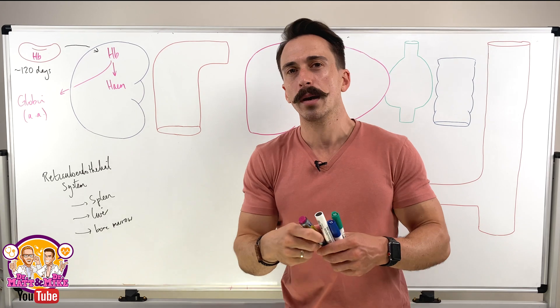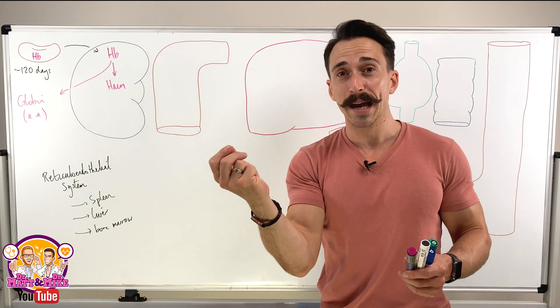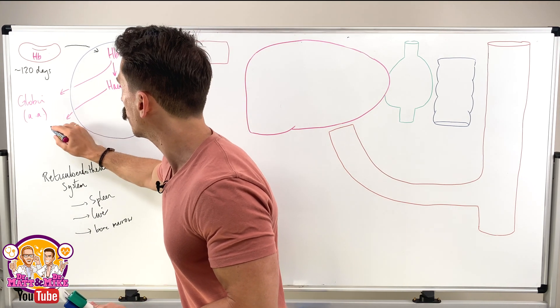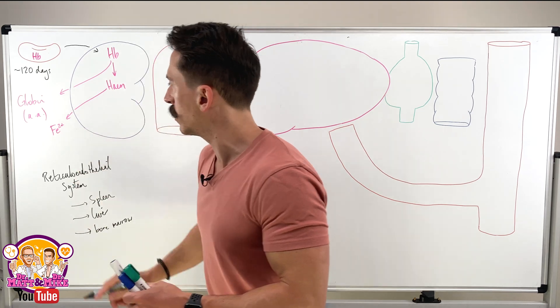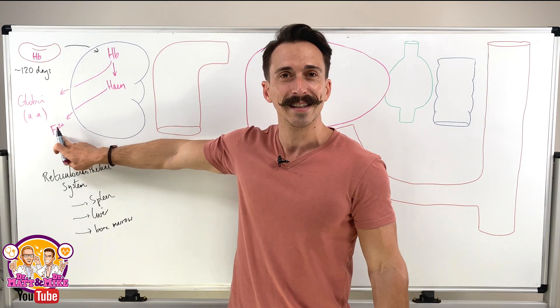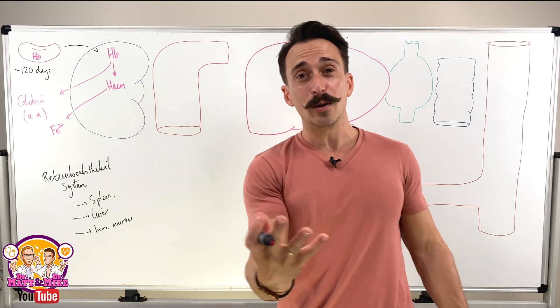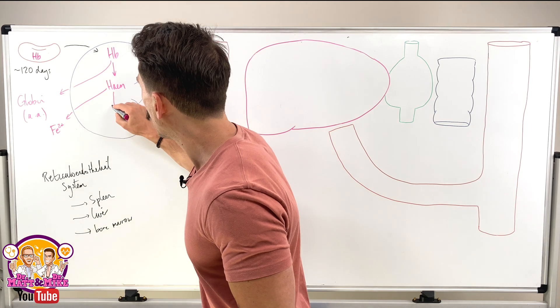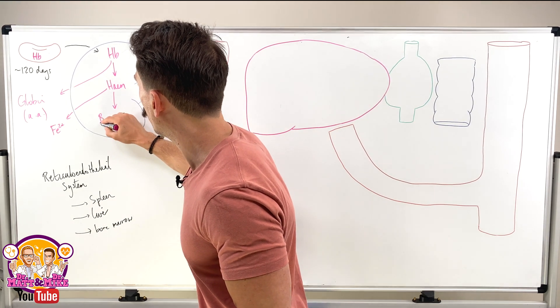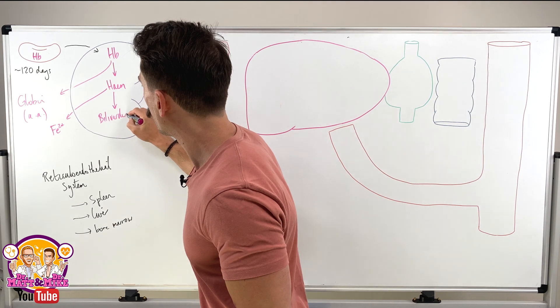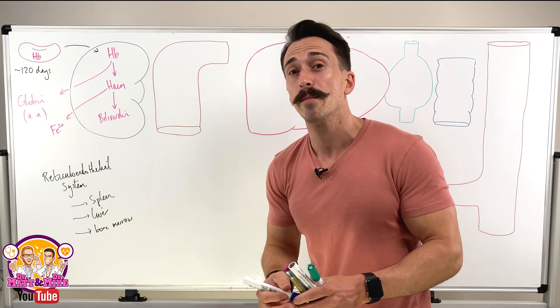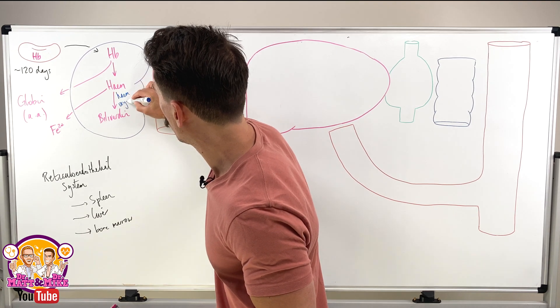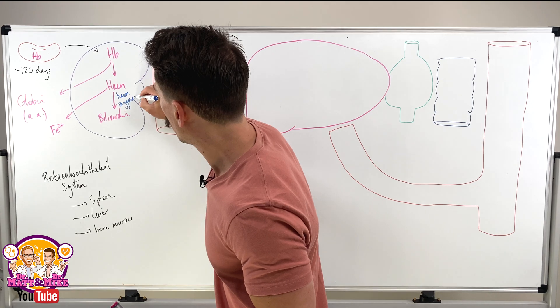The heme portion is what we need to metabolize. But we know that within heme, the crown jewel of heme is iron. And it's actually an iron ion, Fe2+, is the iron ion. That goes and gets reutilized elsewhere in the body. So now we need to metabolize that heme. And we turn that heme into something called biliverdin through an enzyme called heme oxygenase.